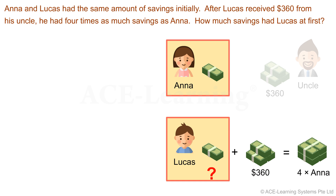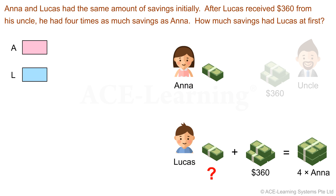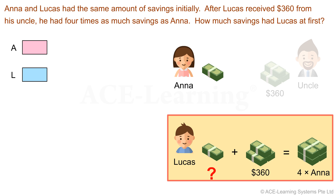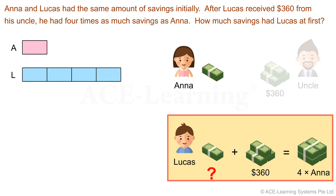From our diagram, we can see that both Anna and Lucas had the same amount of savings initially. So we can represent Anna's savings as one unit, and Lucas's savings also as one unit. Now Lucas received $360 from his uncle, and as a result, he had four times as much savings as Anna. We should add three more equal units so that the amount of savings Lucas has is now four times that of Anna's.